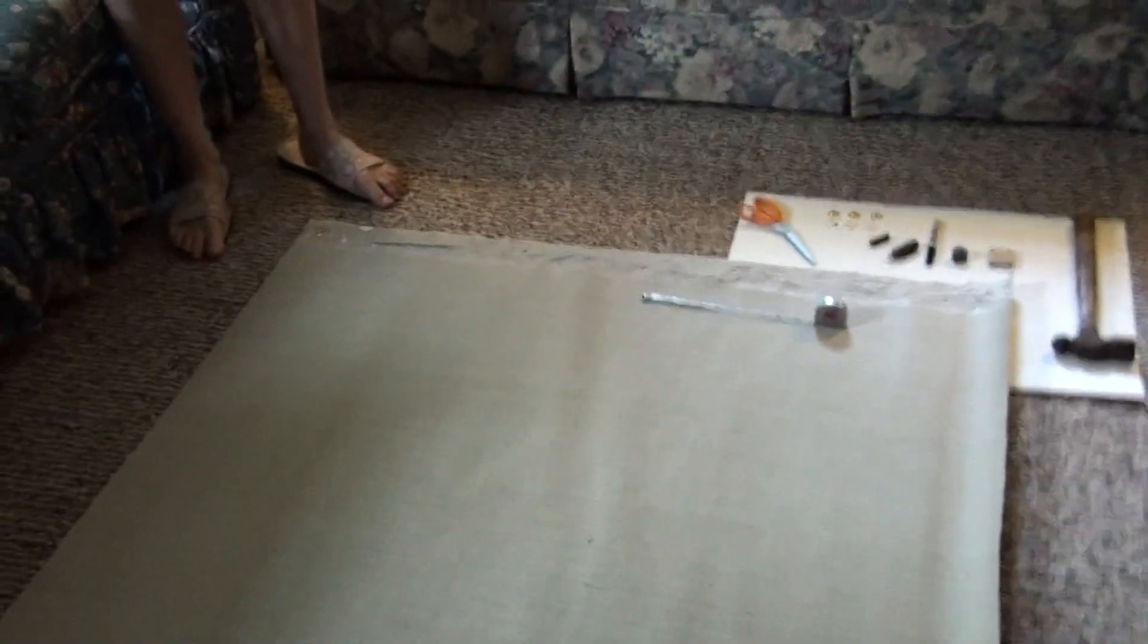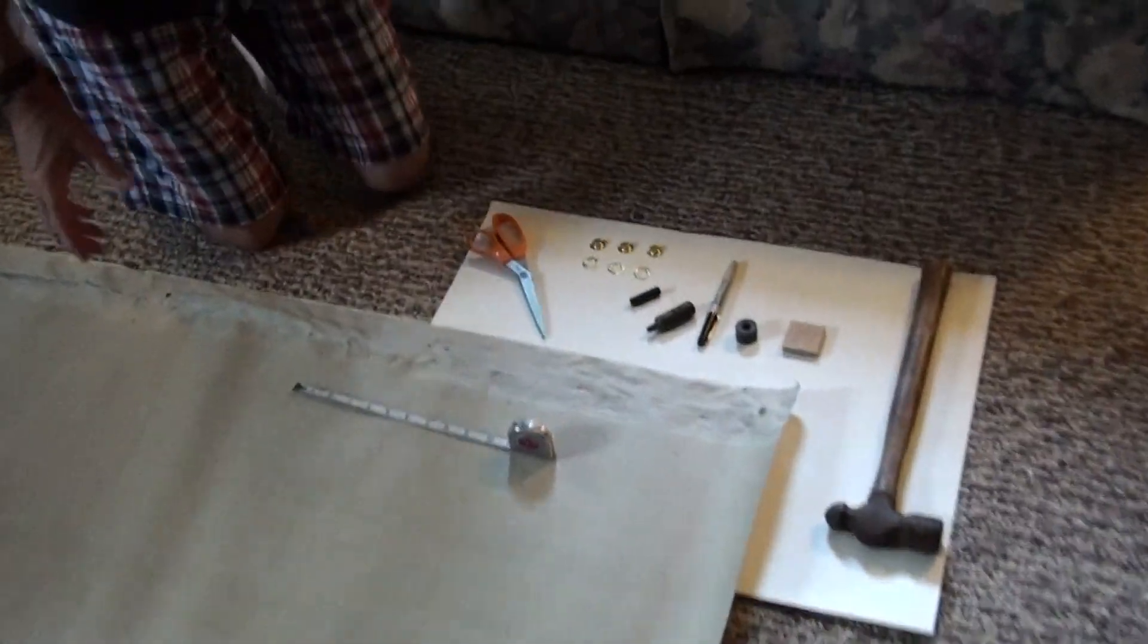On the floor in front of me I've got a piece of canvas about one meter by two meters, and what we're going to do is put about four grommet holes into each end. We'll just do one for you here.